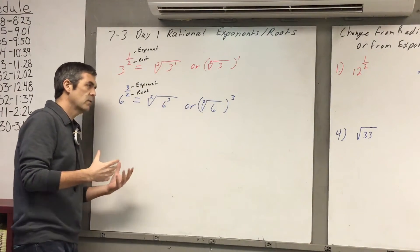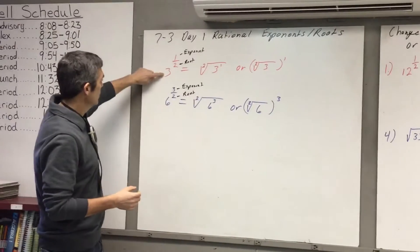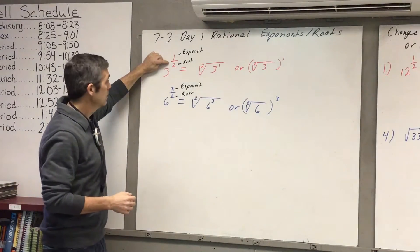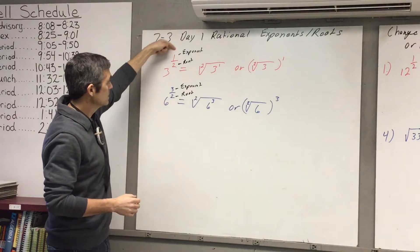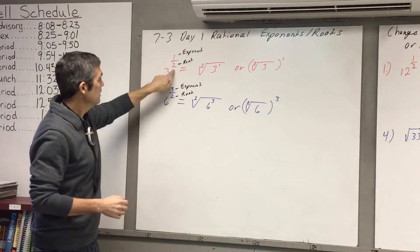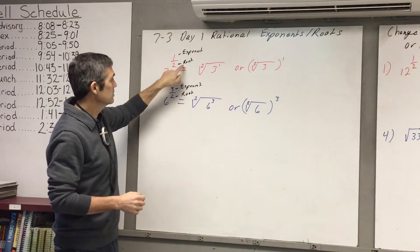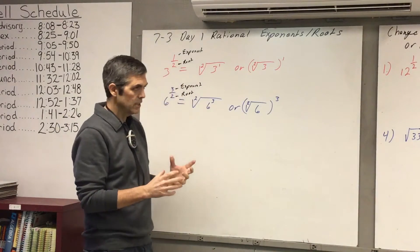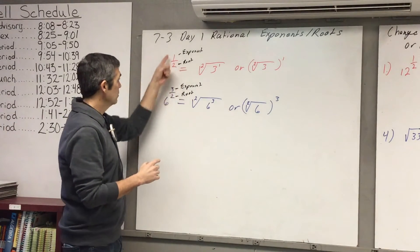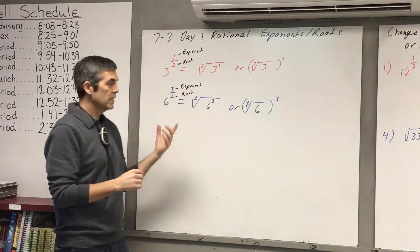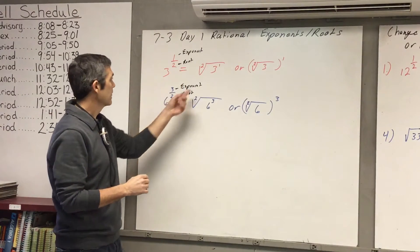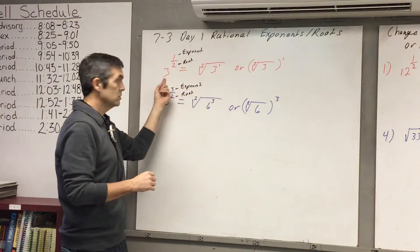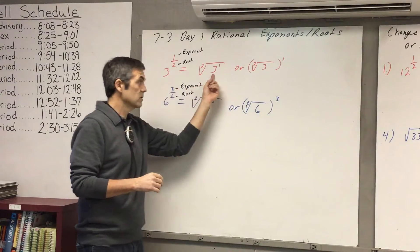The first thing you need to recognize is when you have a number raised to a fraction, the top number is talking about your exponent, and the number down here is talking about a root. You're going to put the base underneath the square root symbol — it goes underneath here.